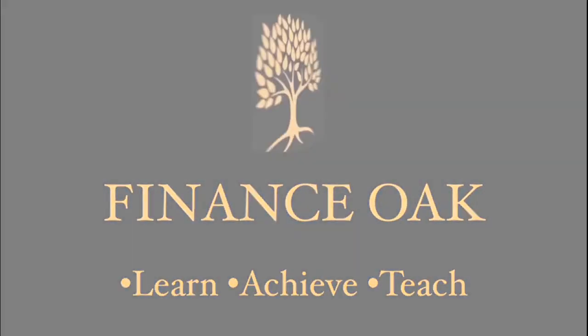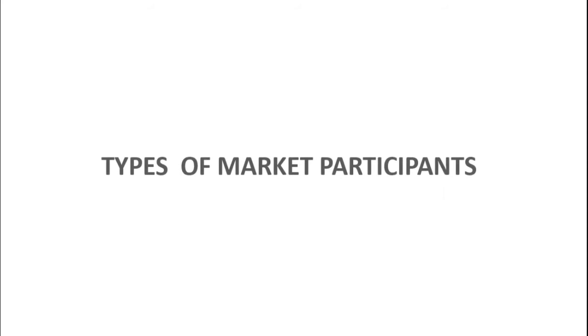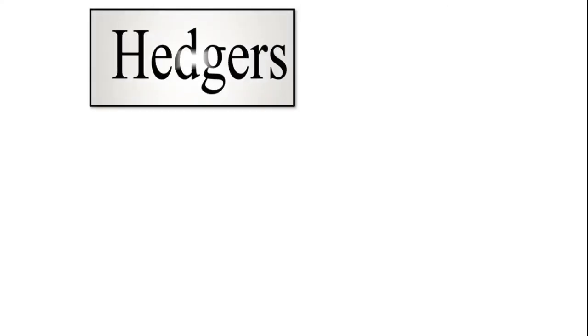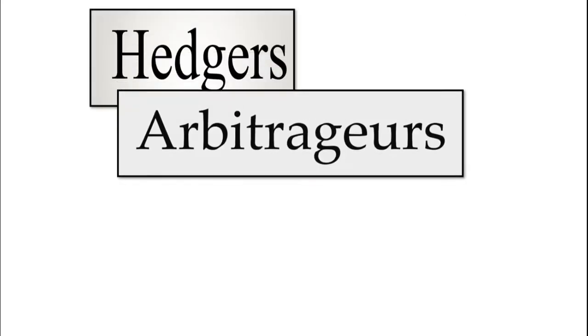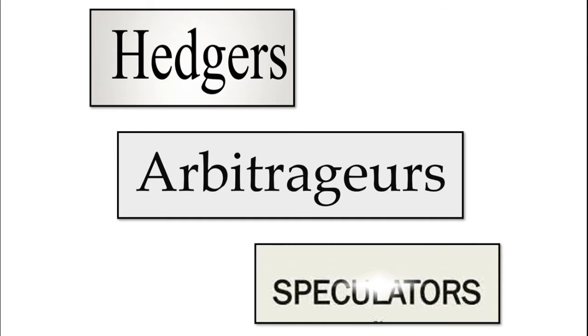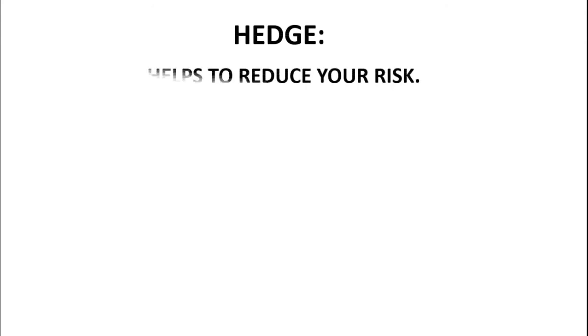Hello everyone and welcome to our channel Finance Oak. Today we are going to talk about three types of market participants: hedgers, arbitrageurs, and speculators. Let us first start with hedgers. But wait, what do you mean by hedge? It simply means to reduce your risk. Let us dive through to an example.